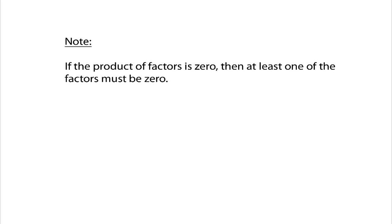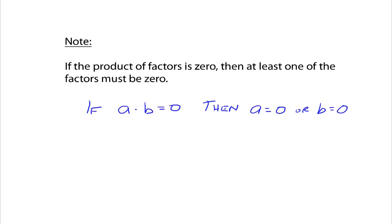Zero times whatever else is going to be equal to zero. In math symbols it would look like: if a times b is equal to zero, then a has to equal zero or b could equal zero. Because if a was equal to zero you'd have zero times b, which would still be zero. And if b was equal to zero, then you could have a times zero, which is still equal to zero. So if we know we've got things multiplied together and that product is equal to zero, then each one of these factors can be equal to zero, and that's going to allow us to actually solve equations.